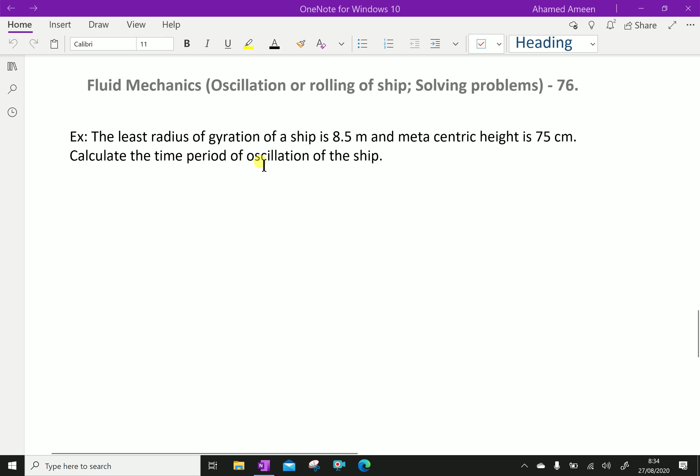The least radius of gyration of a ship is 8.5 meter and metacentric height is 75 centimeter. Calculate the time period of oscillation of the ship.